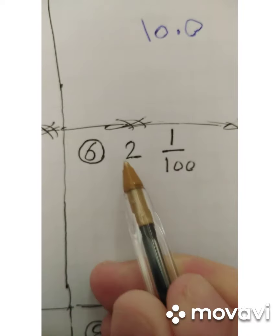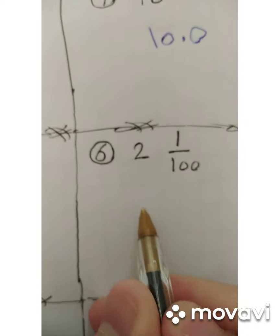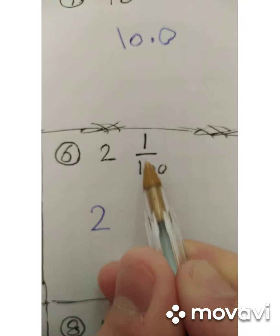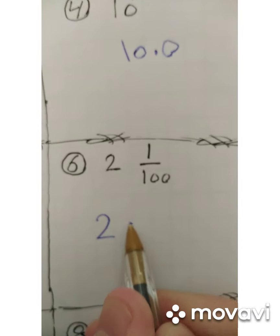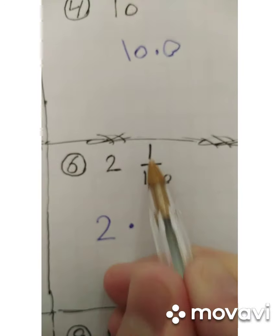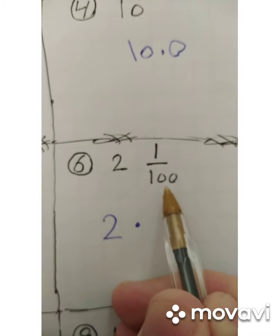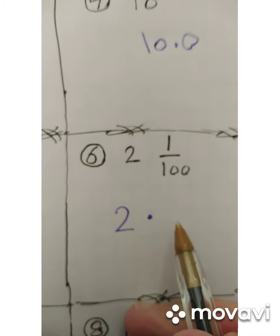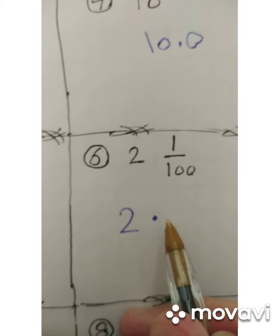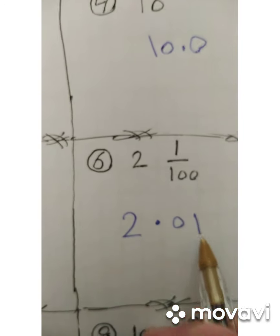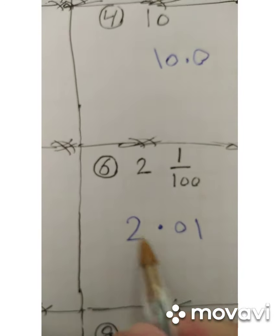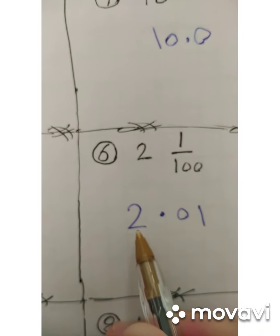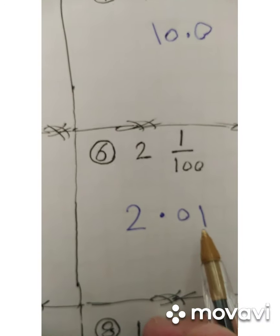One hundredth: hundredths means two decimal places, but we have only one digit. So write zero then one — giving us two point zero one. We read it as two and one hundredth.